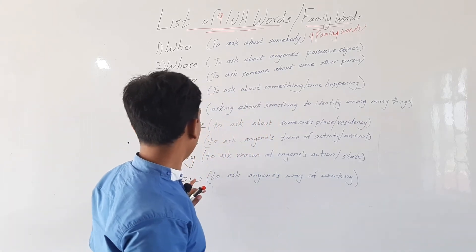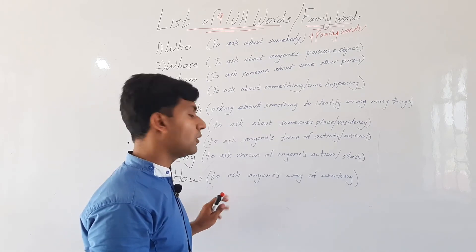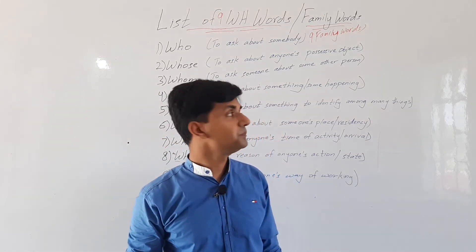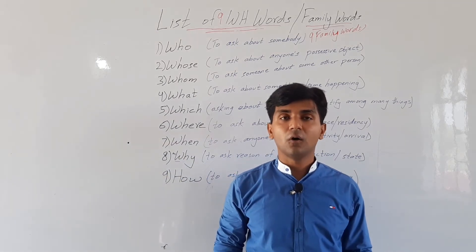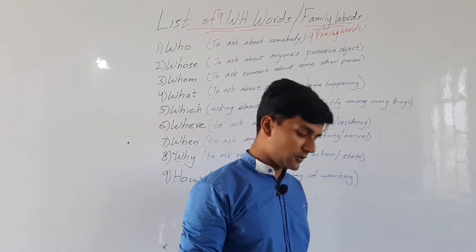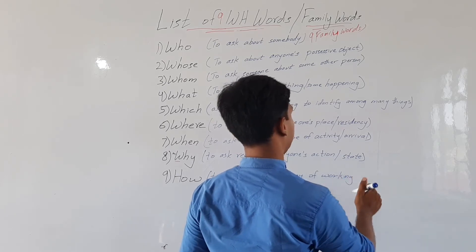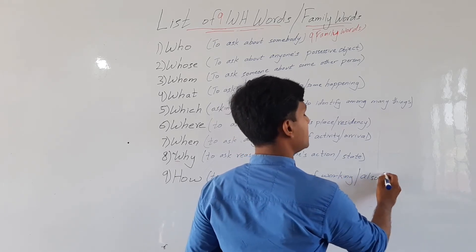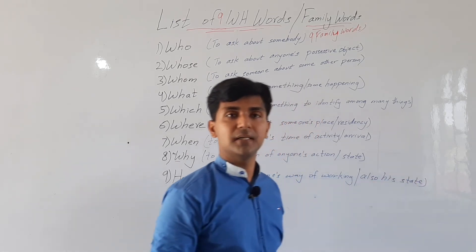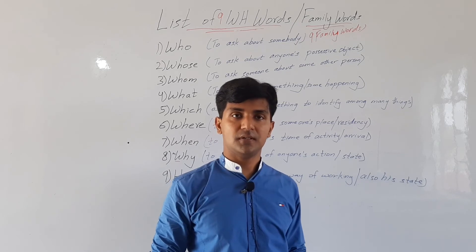Then we have the last word: 'how.' 'How' is used to ask about anyone's way of working or their state. For example, 'How do you do this?' and also 'How are you?' — where we ask about someone's state, whether they are healthy or feeling well.